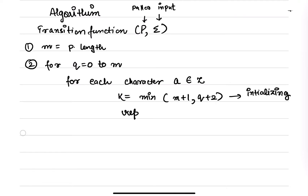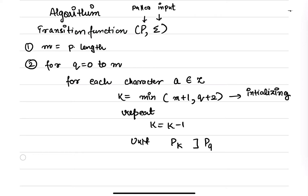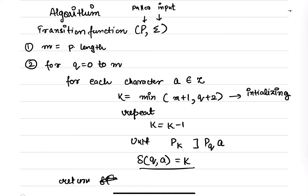Then you will repeat and decrement k until P[k] is not a suffix of P[q] concatenated with a. Then your transition function δ(q, a) will be k — that is what you are returning. So you will be returning delta, which will be the output.